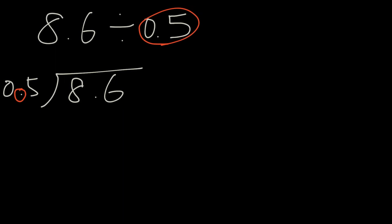We see that this decimal point needs to move one space over, and when we move one decimal point from the divisor, we need to do the same here as well. So now let's rewrite the question. It will now become 86 divided by 5.